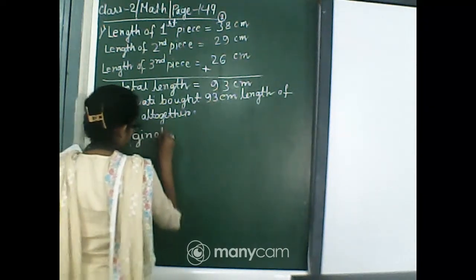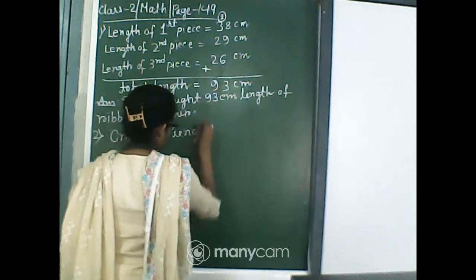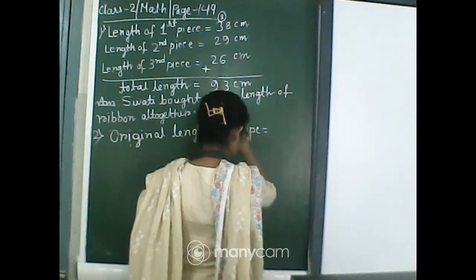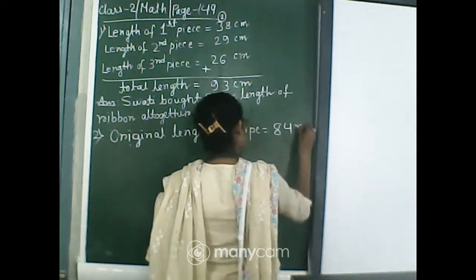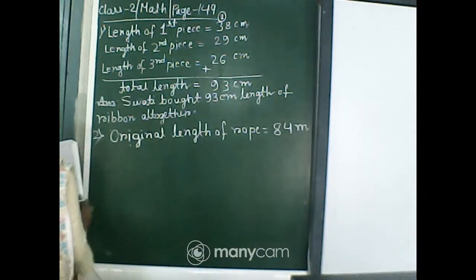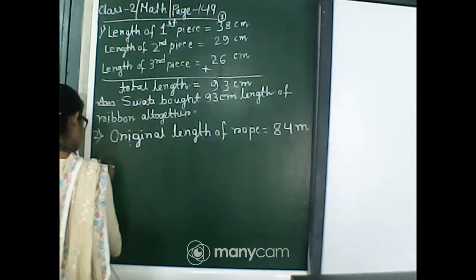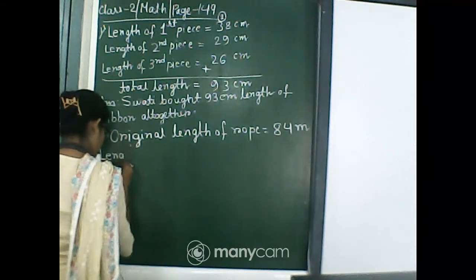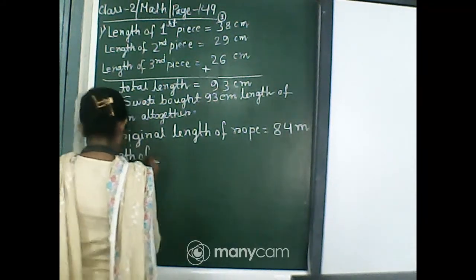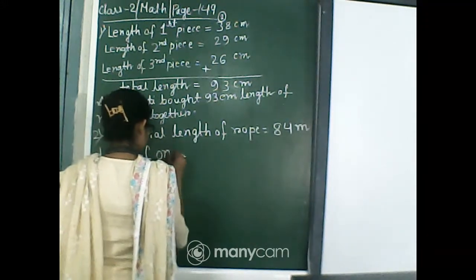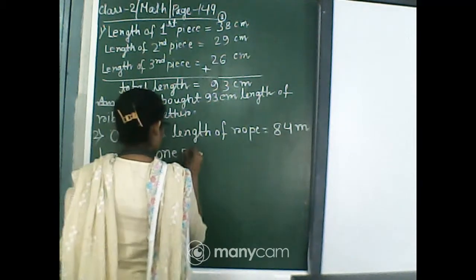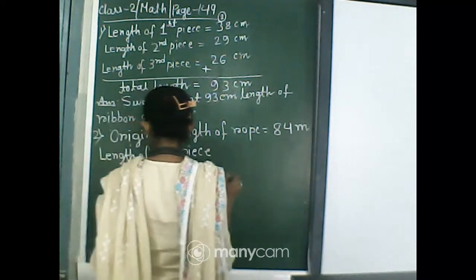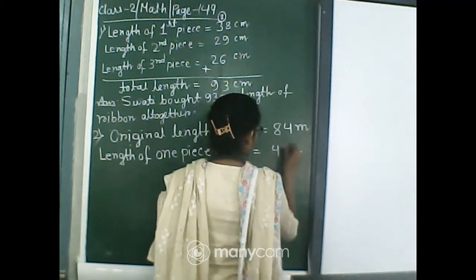What we will write down: original length of the rope, length of one piece is equal to 48 meter.